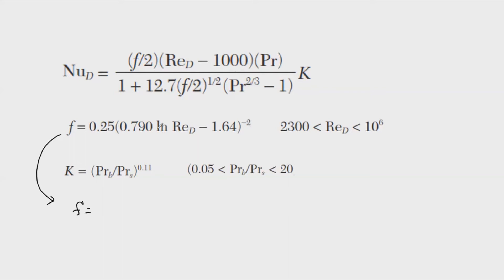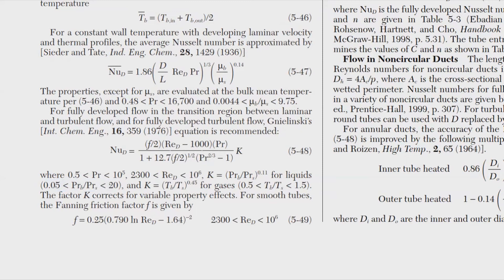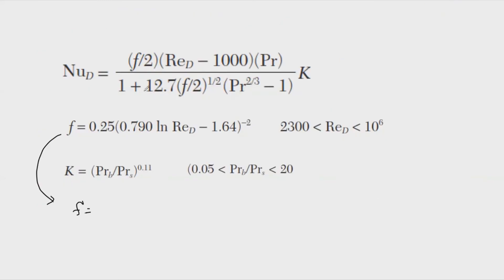Graphs in Momentum Transfer are difficult to read precisely. Using equations gives more exact values, and the correlations are proven and effective. Since this is Heat Transfer, not Momentum Transfer, I'll be using the Fanning Friction Factor directly. Substituting the Reynolds number into the correlation gives us the value of the Fanning Friction Factor.